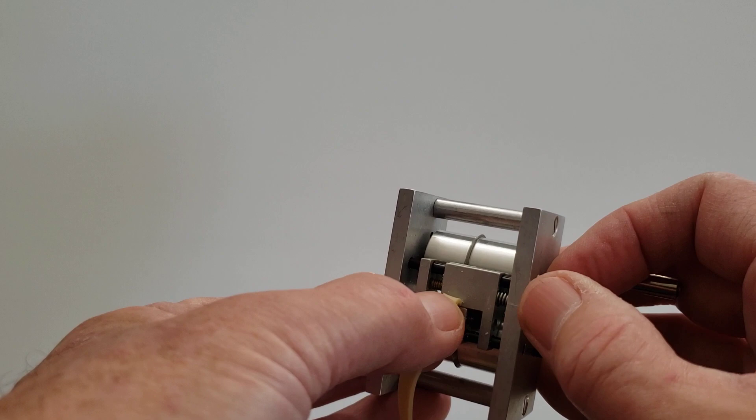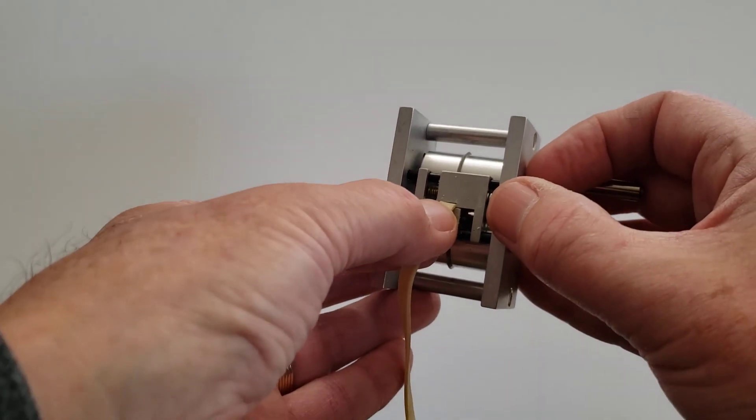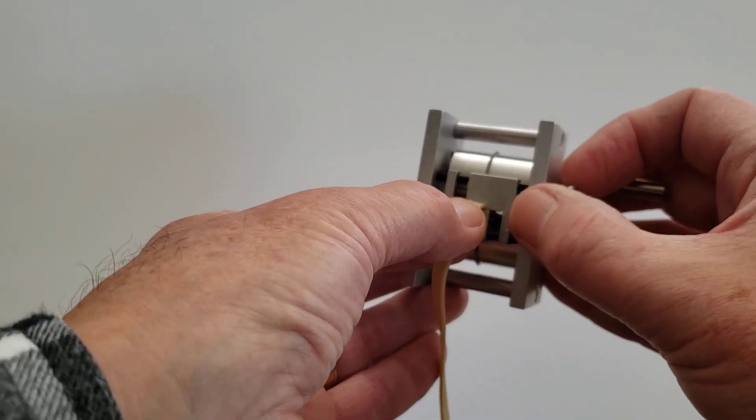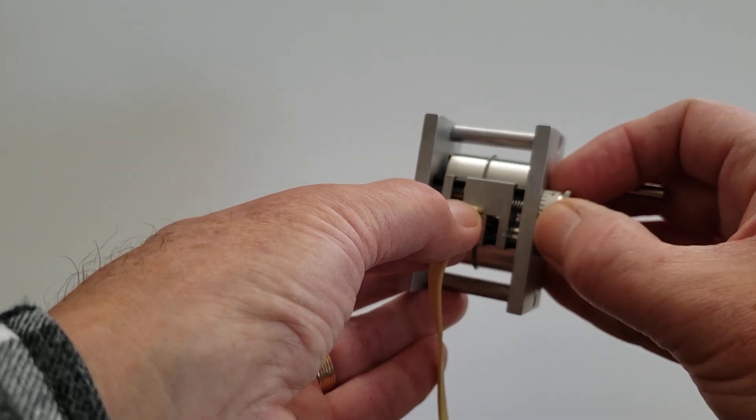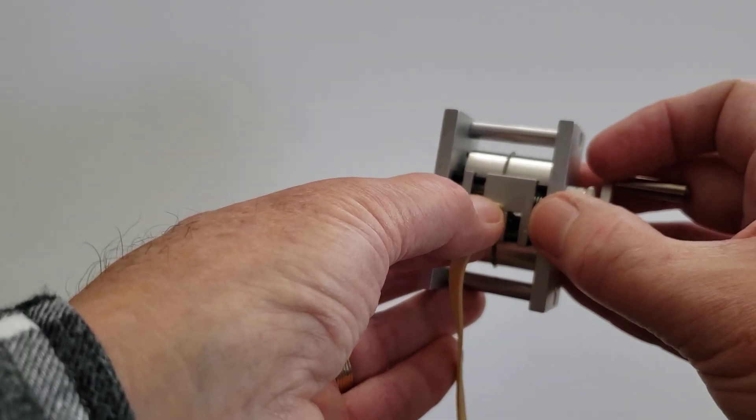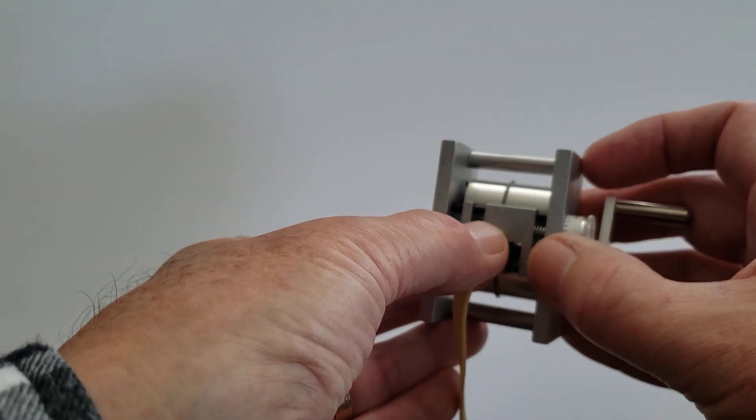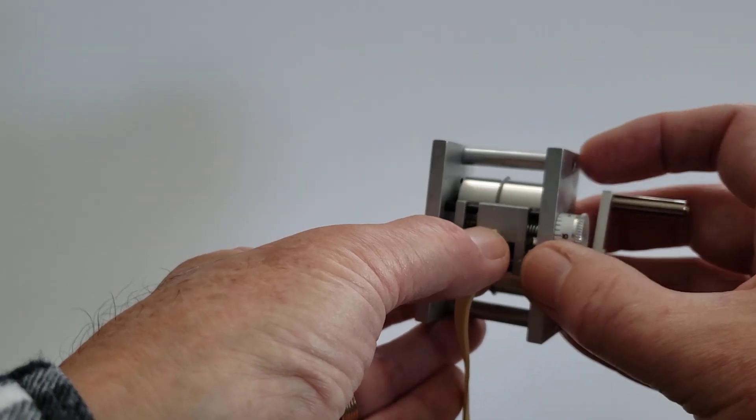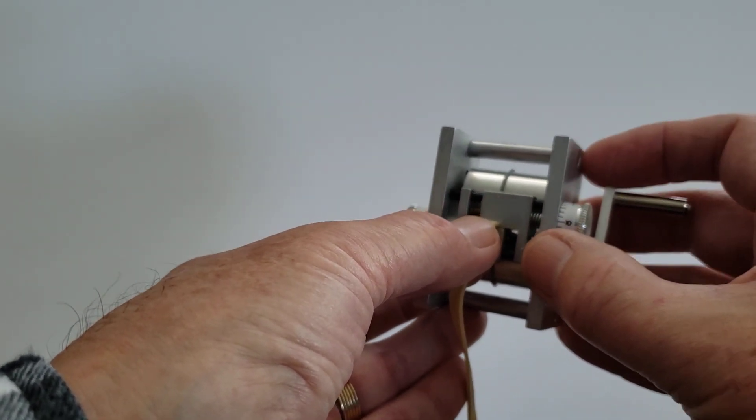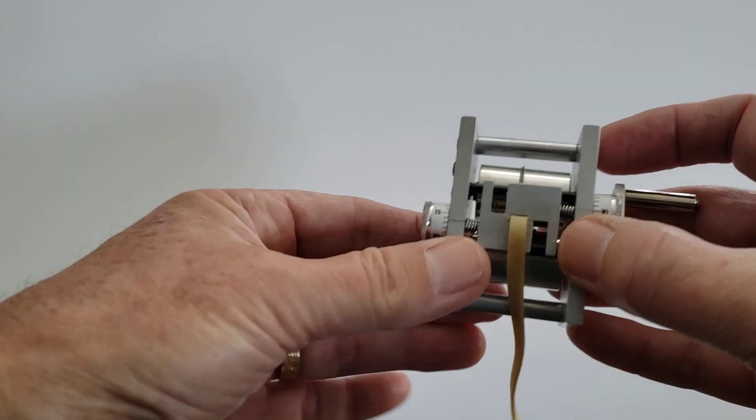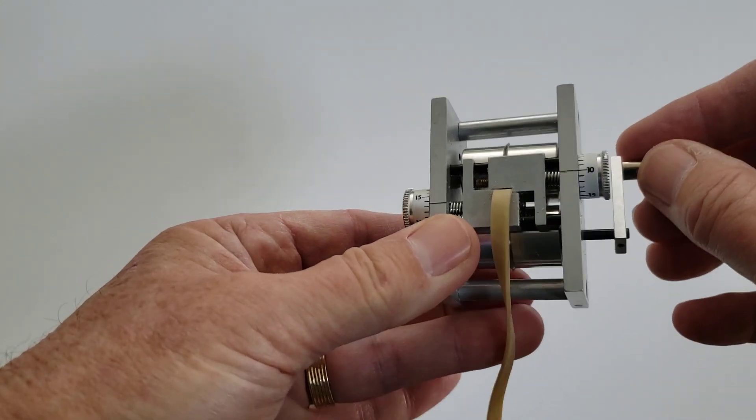But if you tighten it up too tight, it won't be driven when you pull the crank. It won't be driven through. So I think I've got it about the right width there. So let's crank and see what happens.